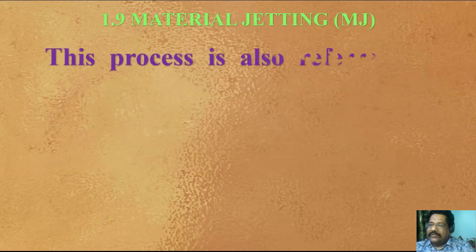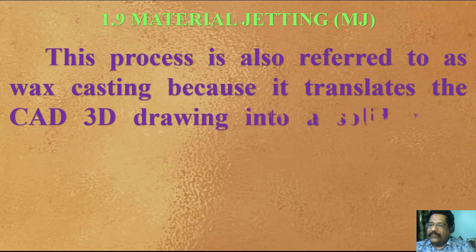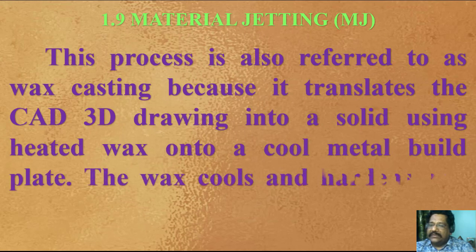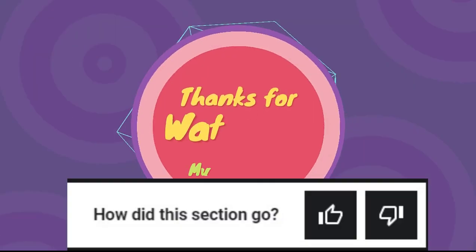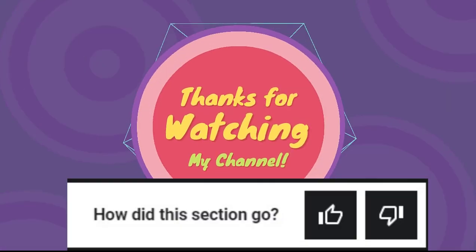Material Jetting. This process is also referred to as wax casting because it translates the CAD 3D drawing into a solid using heated wax onto a cool metal build plate. The wax cools and hardens and can then be cured by UV light.